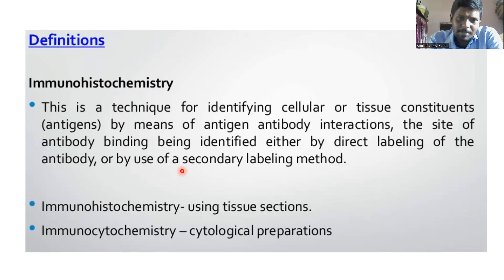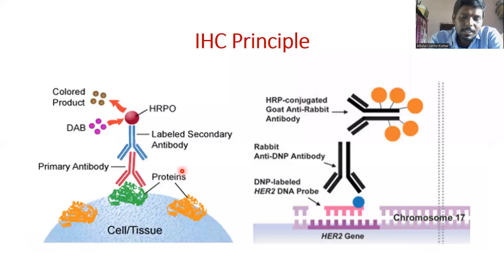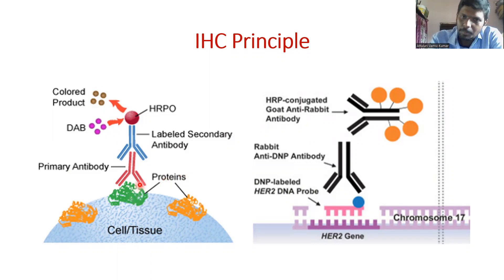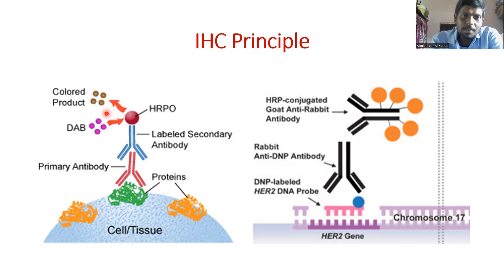We have antibodies that are targeted on specific antigens in the tissue, and we can visualize the antigens with the help of labeled antibodies. The principle: we have antigen, primary antibody binds to the antigen, then a secondary antibody with a conjugate produces a color. That's it — that is the basic principle.